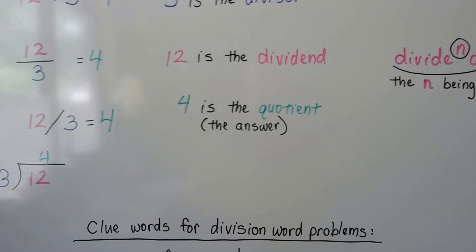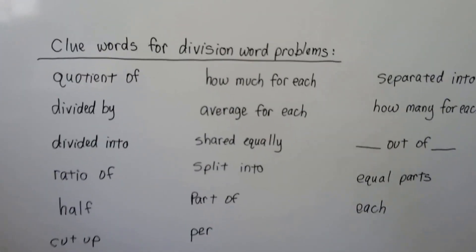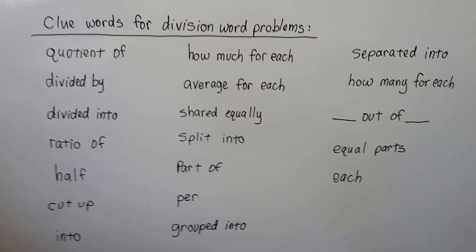And the 4 is the quotient. That's the answer. Now there's clue words that we can use for word problems that have division. And here's some of them.